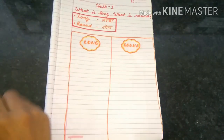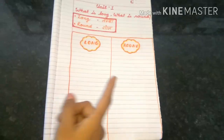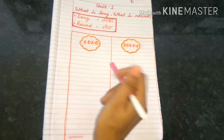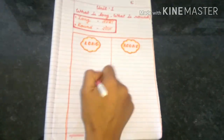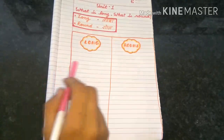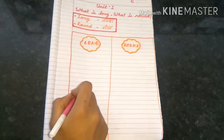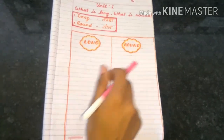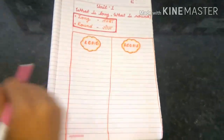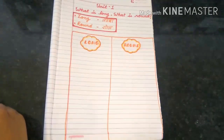You have to help me guess whether the object is long or round. After guessing, I will draw in this table. So let's begin.